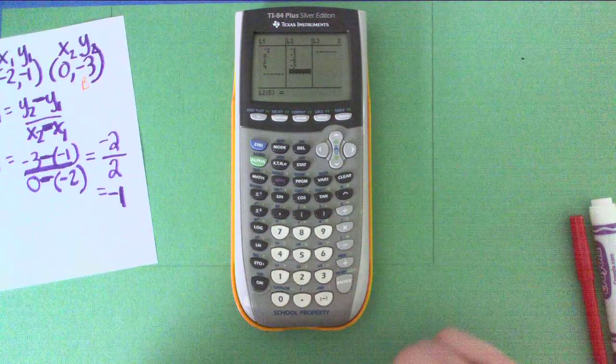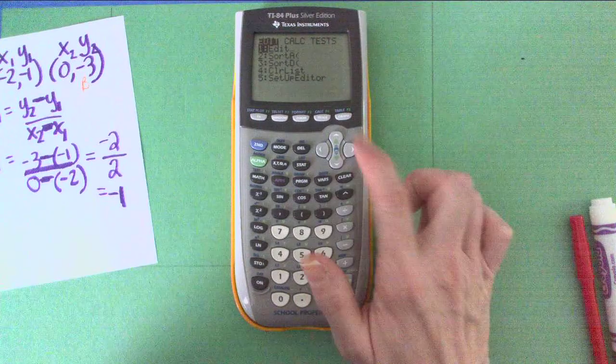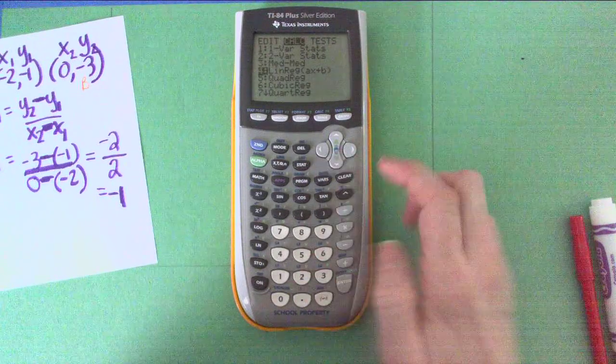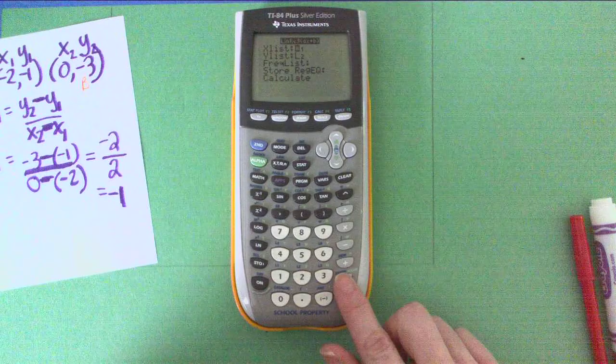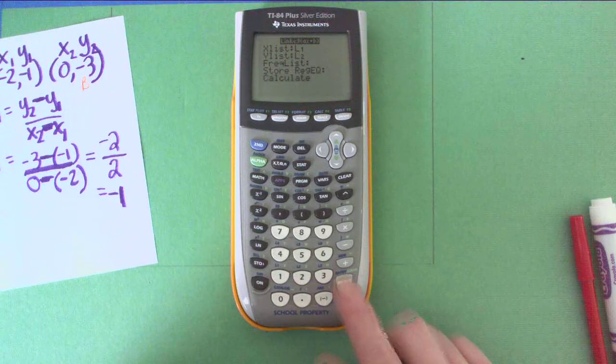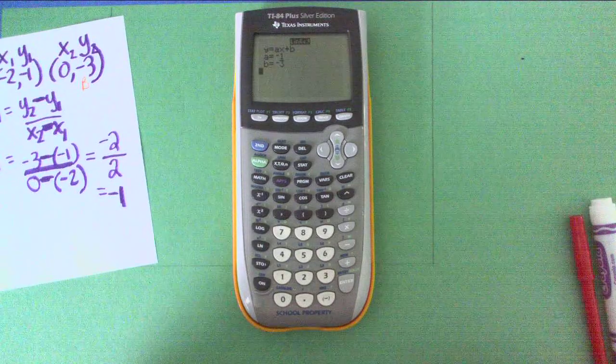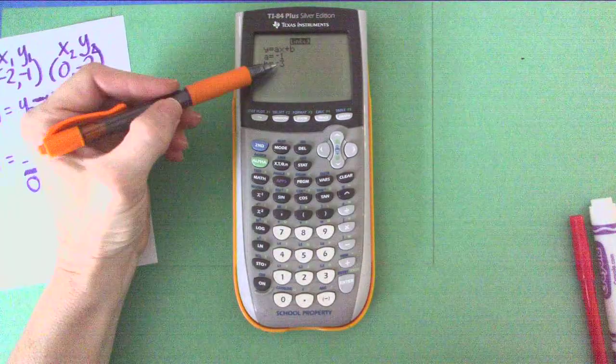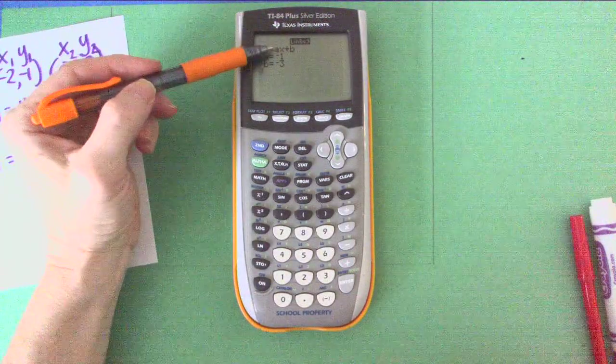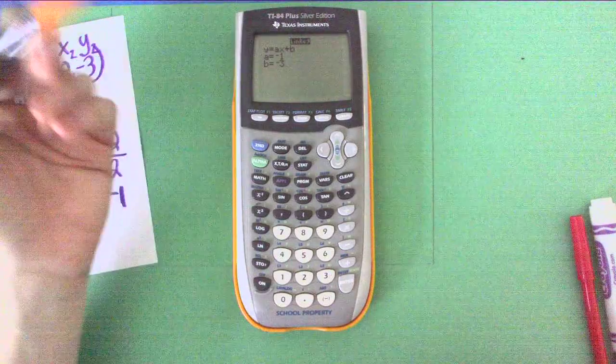Then press stat, calculate, number 4, Linreg. Arrow down until you get to calculate. Hit enter. And there it is. A is negative 1. B is negative 3. So if you insert those, you would have y equals negative 1x minus 3, which is letter choice A.